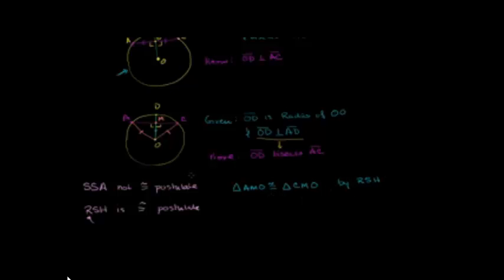So if we know that they're congruent, then their corresponding sides have to be congruent. Based on that, AM is a corresponding side to MC. So we know that AM must be equal to MC because they're corresponding sides. Congruency implies that these are equal. And if those are equal, then we know that OD is bisecting AC. So we've established what we needed to prove.